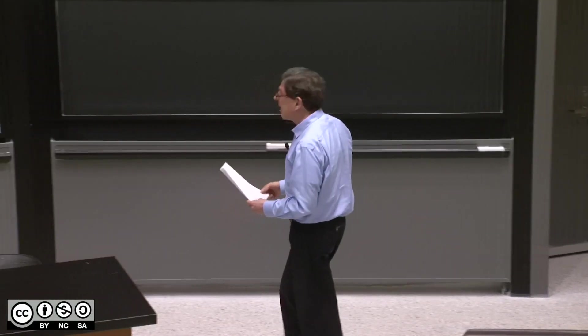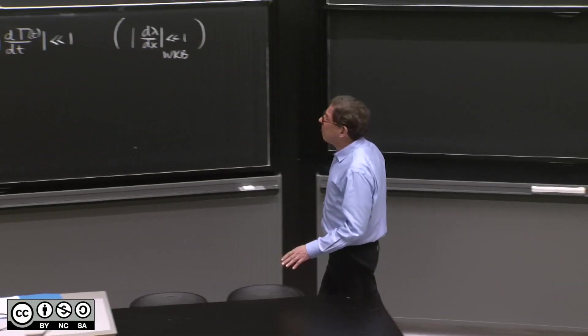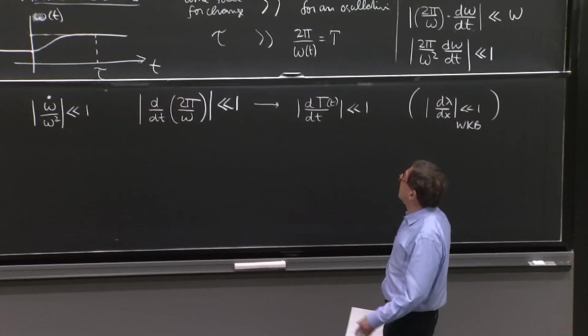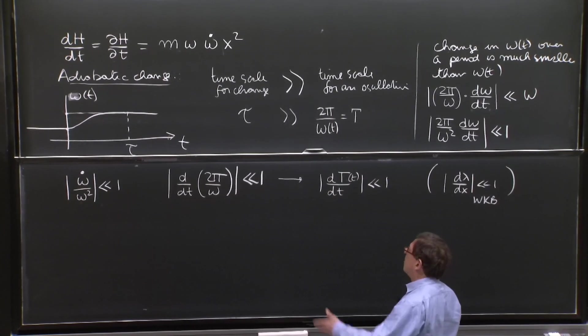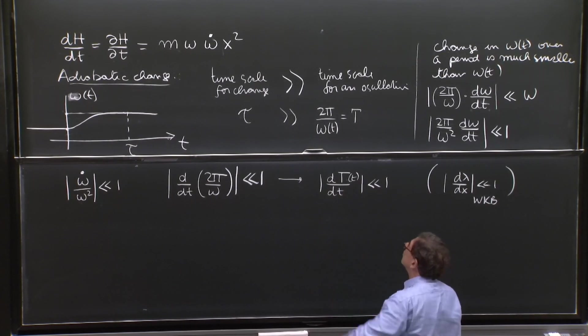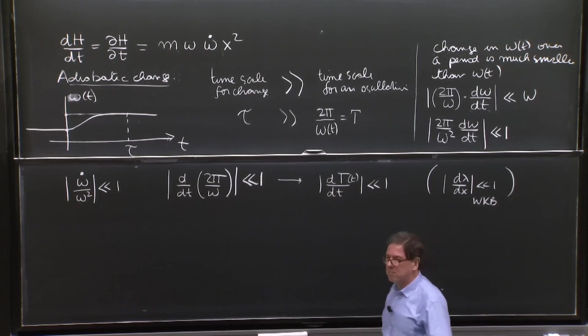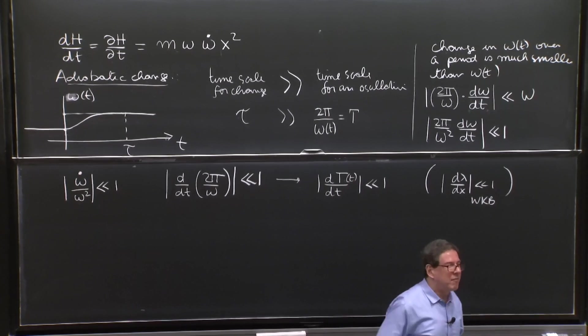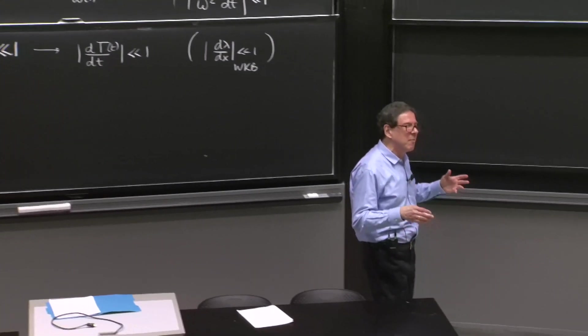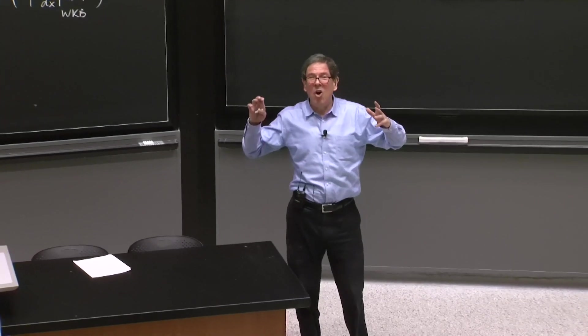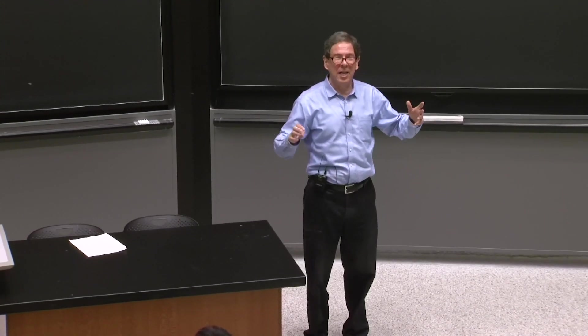So this is our adiabatic change. Now we can say several things. If omega is changing slowly, the energy is changing slowly. But do we have something that changes even more slowly, something that really almost doesn't change?